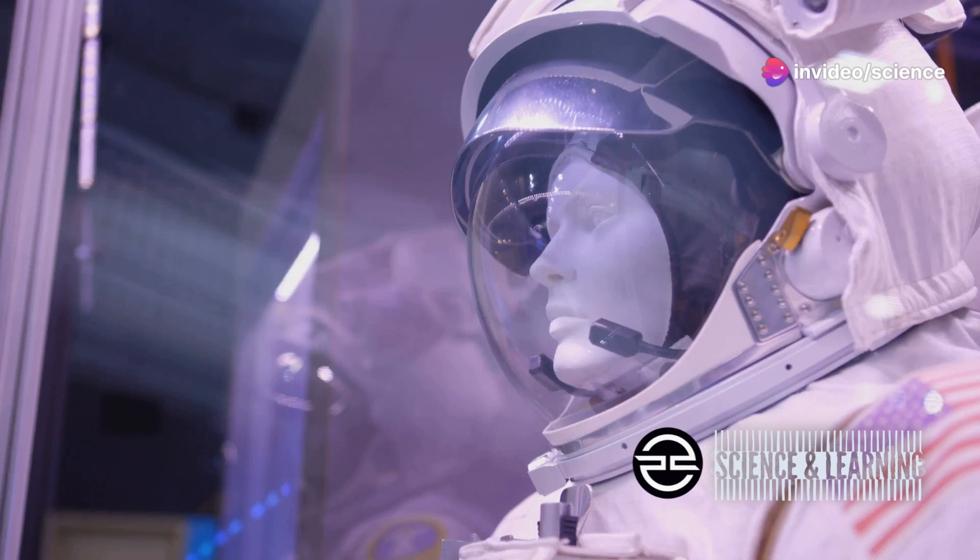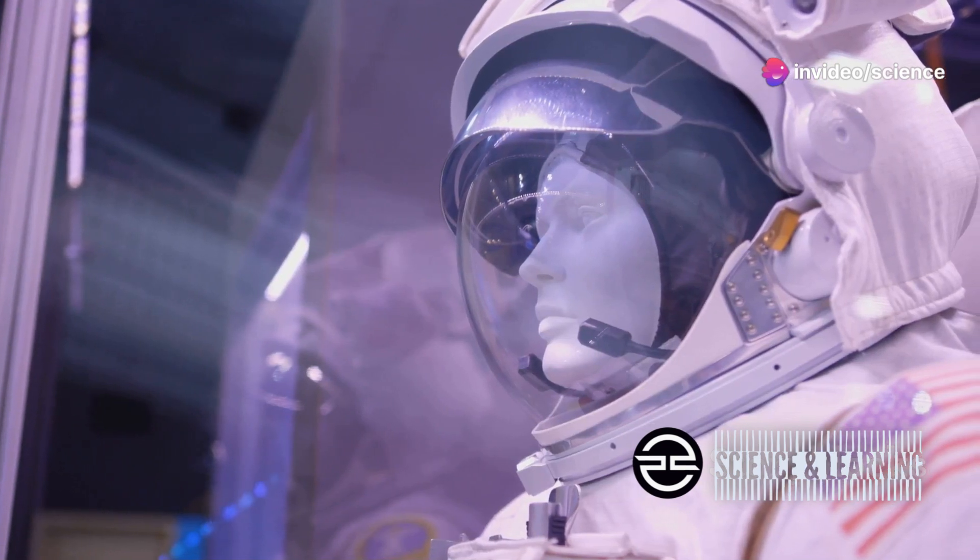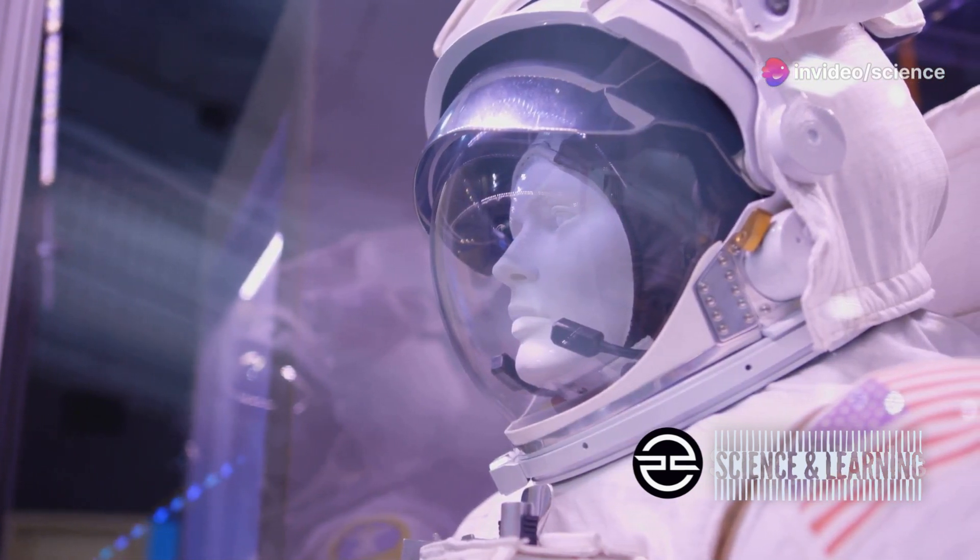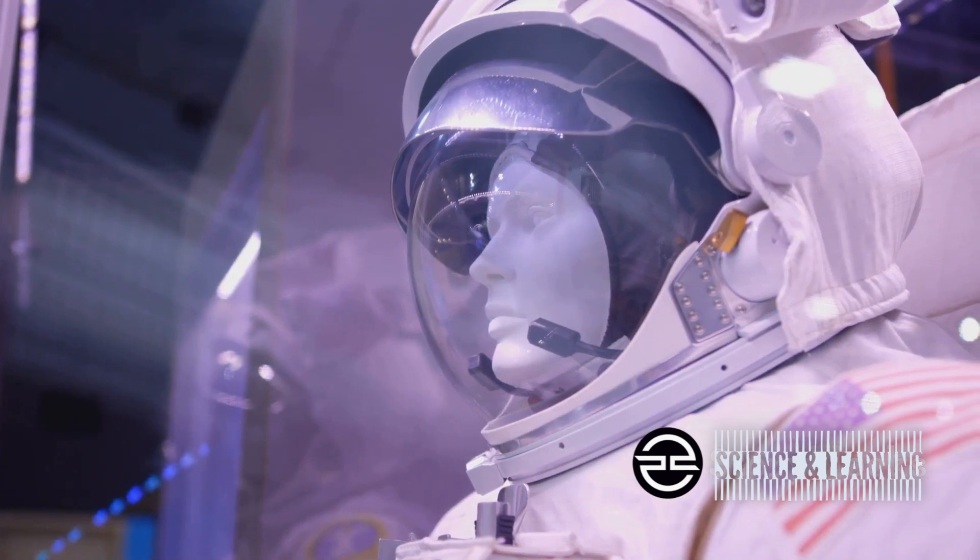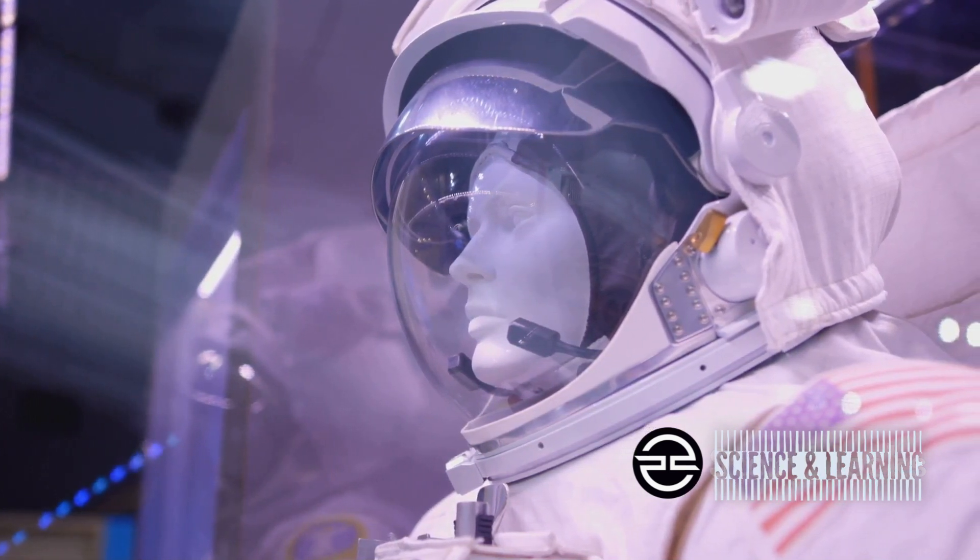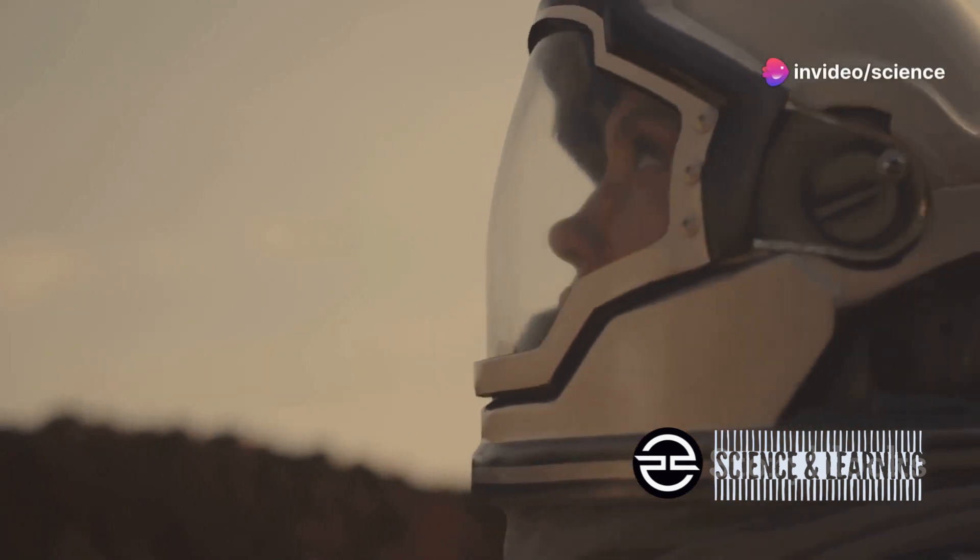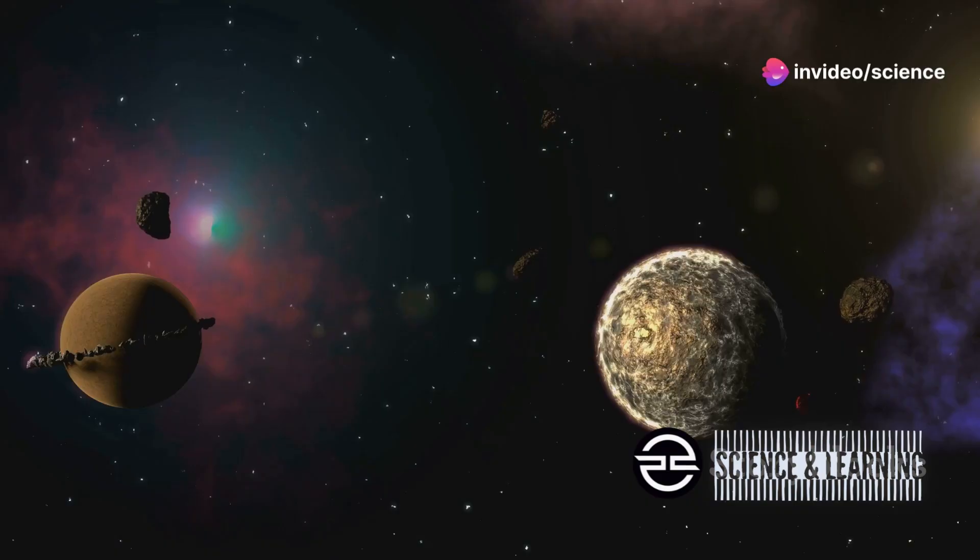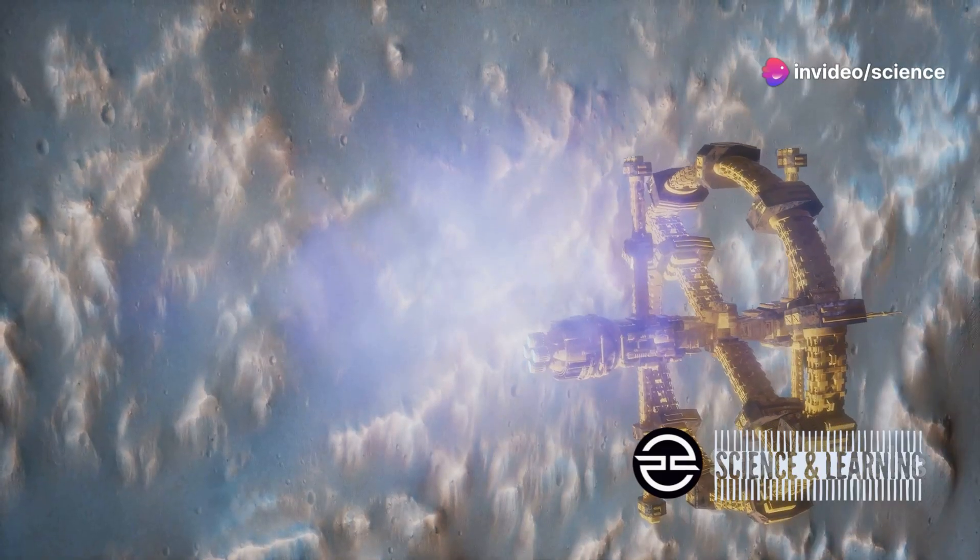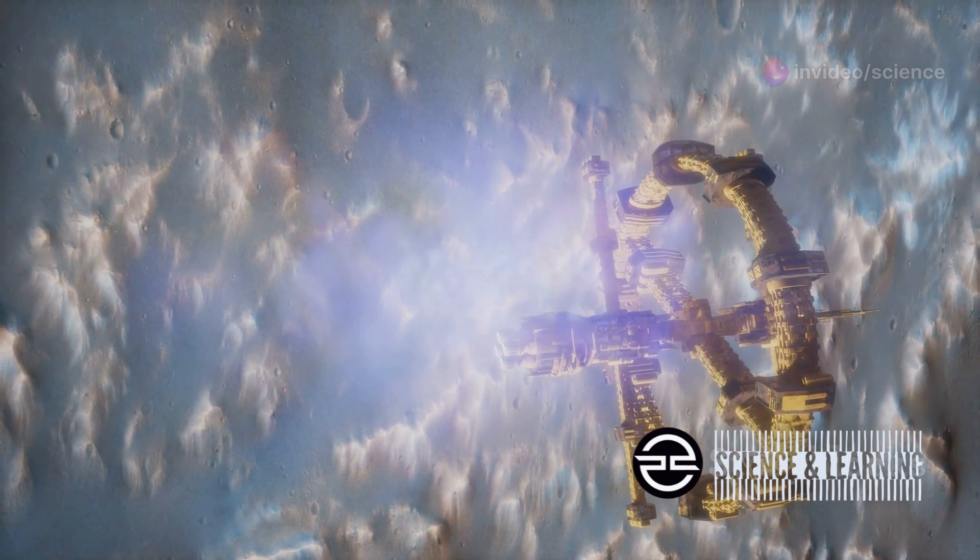Traditional chemical rockets would take six to nine months to reach Mars, exposing astronauts to prolonged periods of space radiation and the psychological challenges of extended space flight. The implications of this technology extend far beyond Mars, enabling us to explore the outer solar system, reach the asteroid belt, and even venture beyond our solar system.